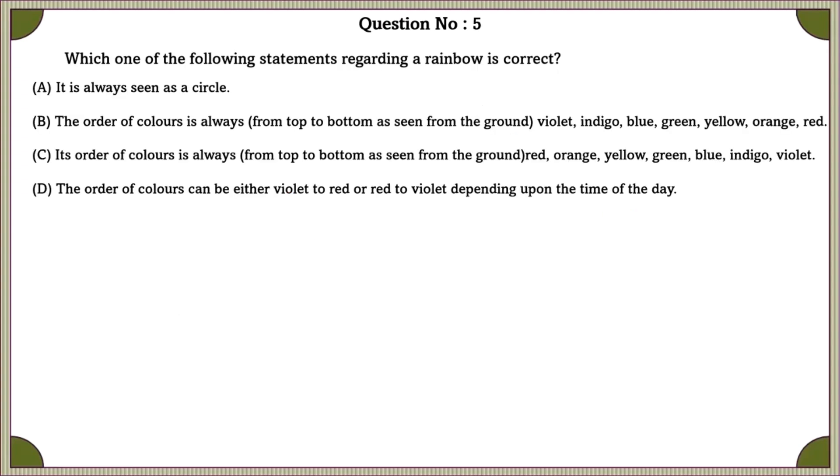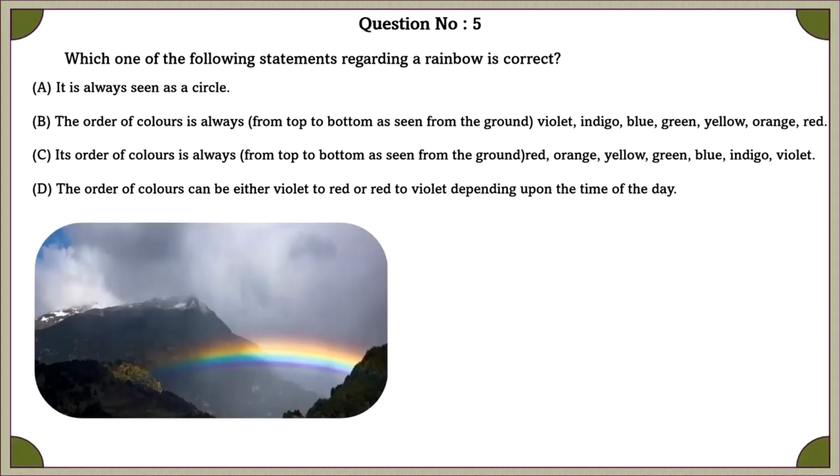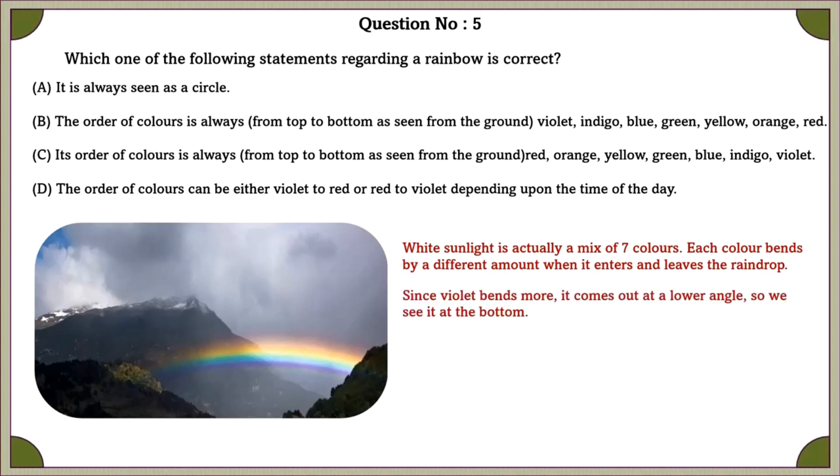Question number 5. Which of the following statements regarding a rainbow is correct? White sunlight is actually a mix of 7 colors. Each color bends by a different amount when it enters and leaves the raindrop. Since violet bends more, it comes out at a lower angle, so we see it at the bottom. Red bends less, so it comes out at a higher angle, so we see it at the top.